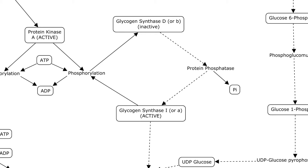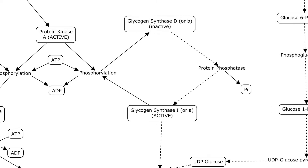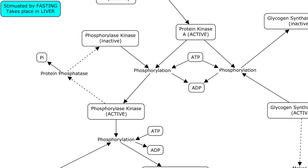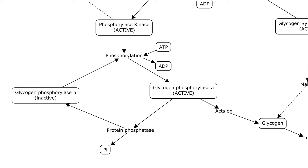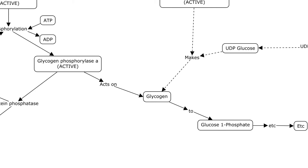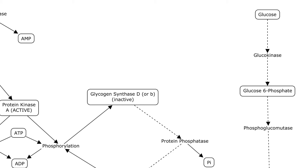So your glycogen synthase is deactivated — you're not going to be making any glycogen. Protein kinase A also phosphorylates an inactive phosphorylase kinase, which activates it. That uses ATP, since phosphorylation requires transferring a phosphate. When your phosphorylase kinase is active, it phosphorylates the inactive glycogen phosphorylase B and activates it into glycogen phosphorylase A, also requiring ATP. That acts on your glycogen to make G1P, and so on. The dotted lines show what is not going to happen because of the phosphorylation of your glycogen synthase.